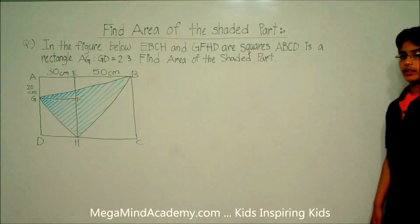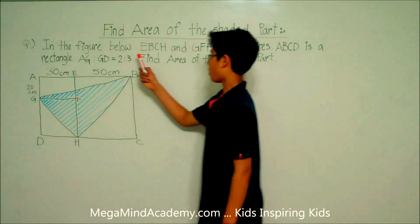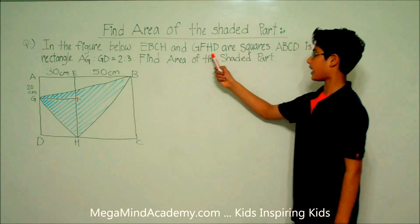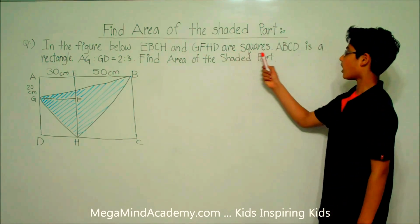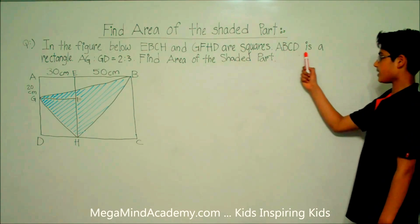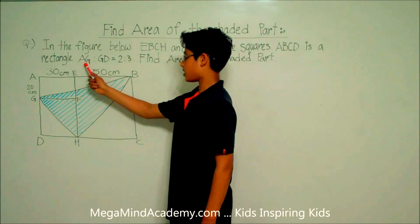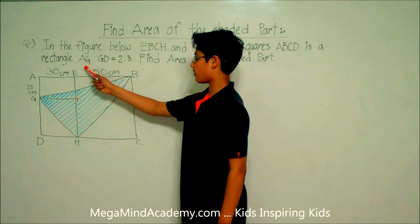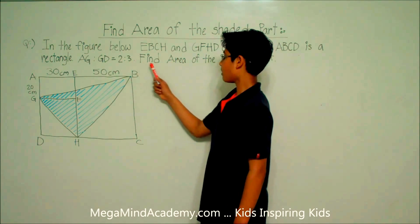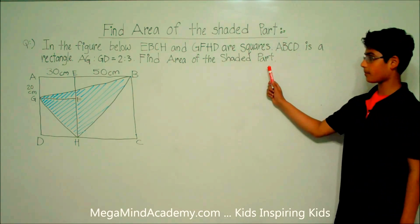Let's say we have a problem like in the figure below. E, B, C, H and G, F, H, D are squares. ABCD is a rectangle. The ratio of AG to GD is 2 to 3. Find the area of the shaded part.